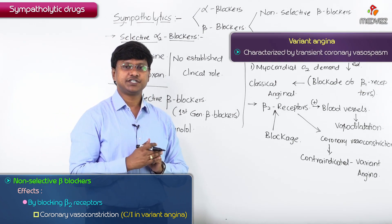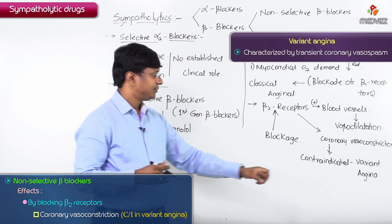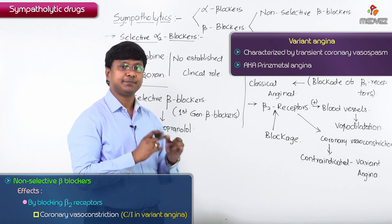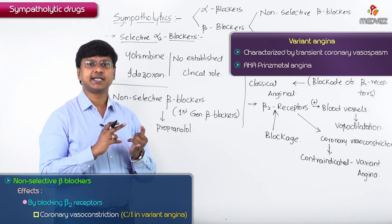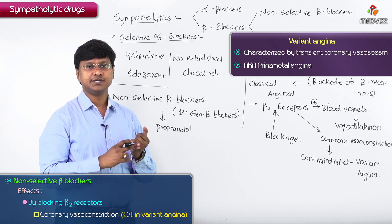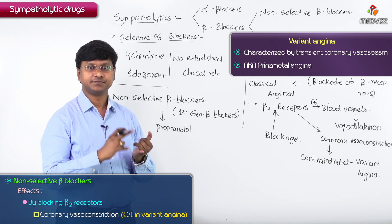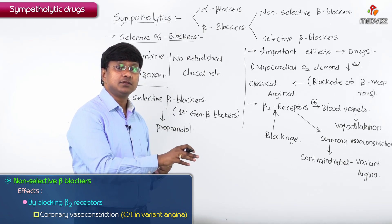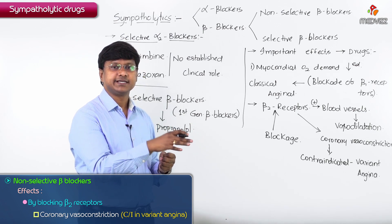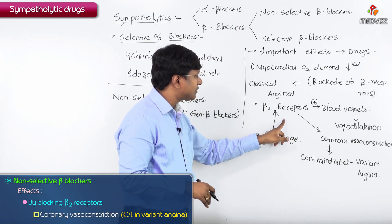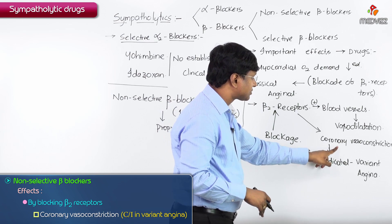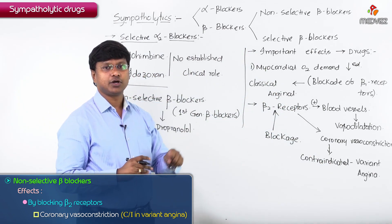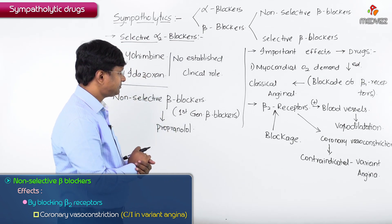Variant angina is the clinical condition characterized by coronary vasospasm. It is also called Prinzmetal angina, which is due to transient coronary vasospasm. In patients with variant angina, non-selective beta blockers will further cause blockade of beta 2 receptors, further causing coronary vasoconstriction and precipitation of variant angina. Therefore, non-selective beta blockers are contraindicated in variant angina.